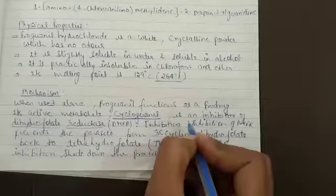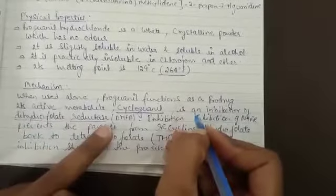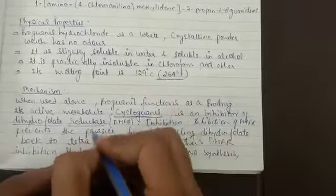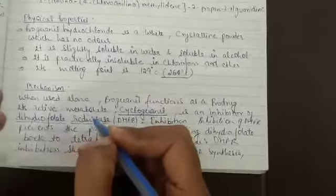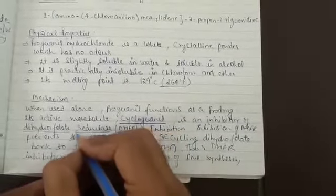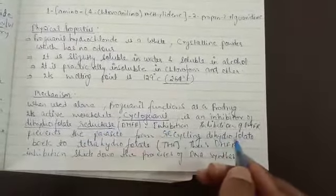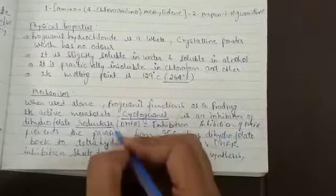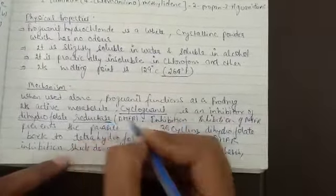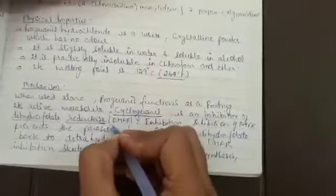This cycloguanil inhibits an enzyme called dihydrofolate reductase. This enzyme is needed for protein synthesis and cell wall formation or synthesis. So this is why the malaria parasite will not grow - it inhibits it.